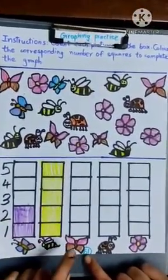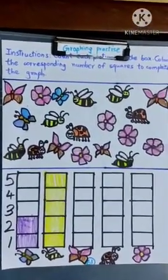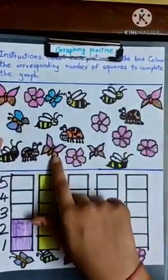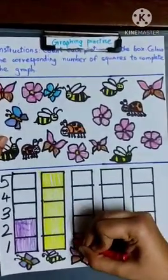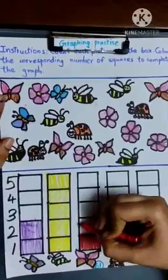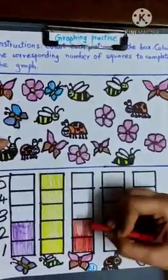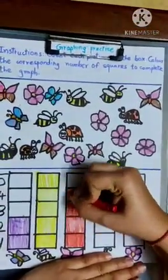Then, we have a pink and brown winged butterfly. One, two, three, four. There are four of them. So, we are going to color four boxes. One, two, three, four.